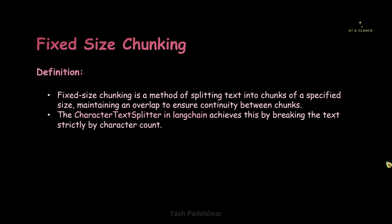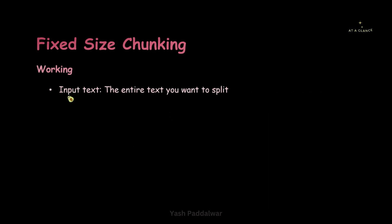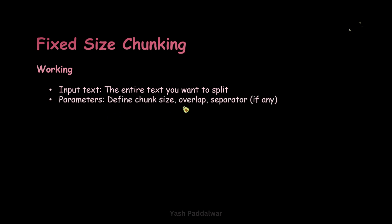Now let's have a look at the working of fixed size chunking. As input we'll be providing the entire text we want to split into chunks — that will be called the input text. The LangChain CharacterTextSplitter class has certain parameters: chunk size, overlap, and separator if any. Chunk size defines the size of every single chunk. Overlap defines the total number of characters to repeat from the previous chunk into the current chunk. The separator parameter is used whenever the document has certain separators, for example special patterns or markdowns.